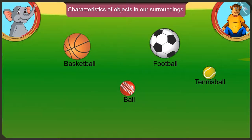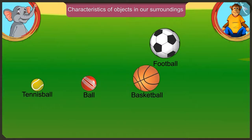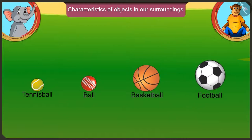Wow Appu! Now come on, just arrange these balls in the ascending order of their size. Here, according to their size, we first place the smallest tennis ball, then the ball bigger than that, then basketball and finally we place the largest football. Well done Appu!